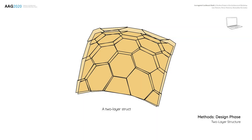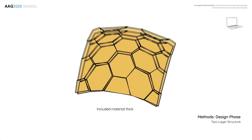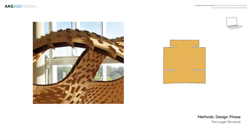Several physical tests were made to determine the right distance between the two layers, taking material properties and sheet thickness into account. For the pavilion structure, a distance of 9 cm was selected.